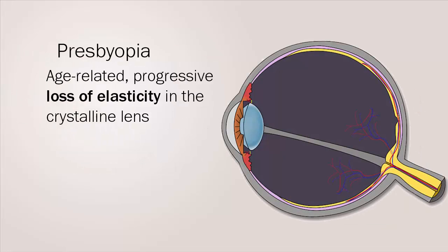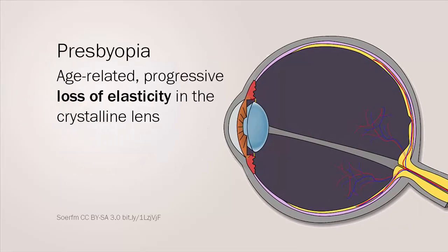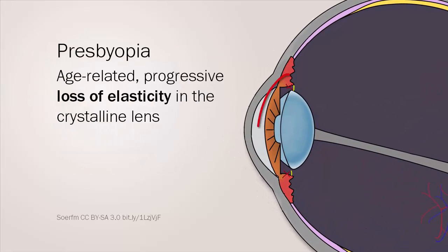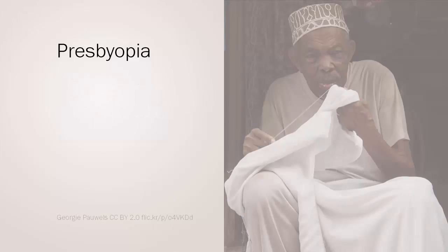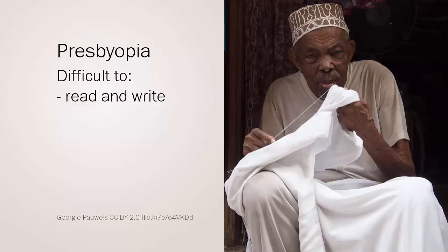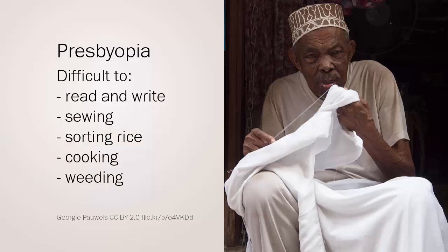Presbyopia is caused by age-related and progressive loss of elasticity in the crystalline lens in the eye. This diminishes people's ability to focus on near objects and makes it increasingly difficult to read and write, as well as carry out everyday tasks such as sewing, sorting rice, cooking or weeding, for example.